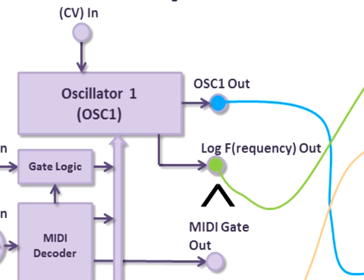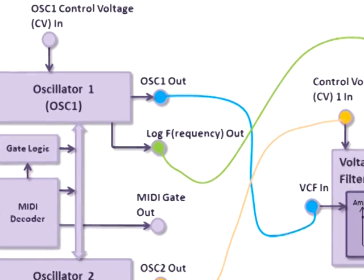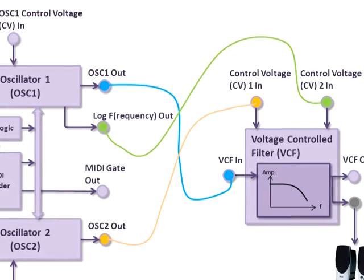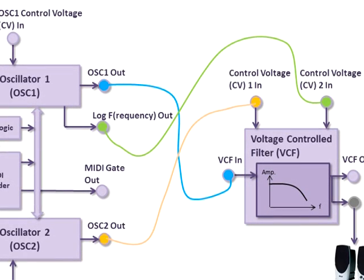Specifically, we've got an output from oscillator one which has a voltage that depends on the logarithm of the frequency of the note being played. We can link that into a control voltage input for the filter, which will modify the filter cutoff, and adjust the gain control by ear to get a flat response. It's worth noting that the control voltage inputs to the filter are approximately logarithmic as well, which is why we can link in the log output.